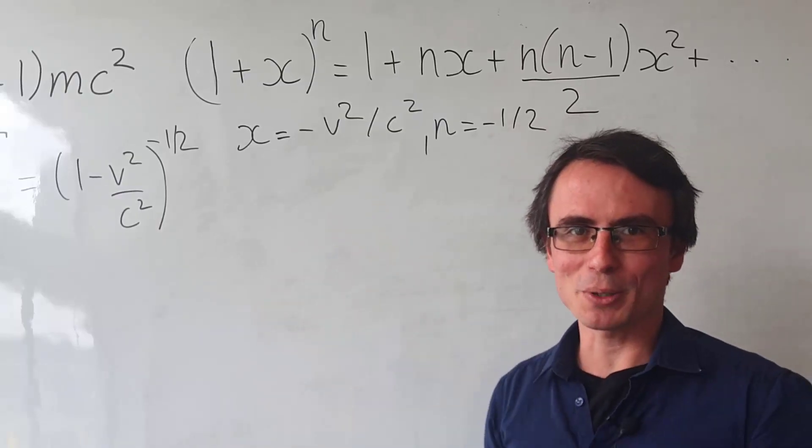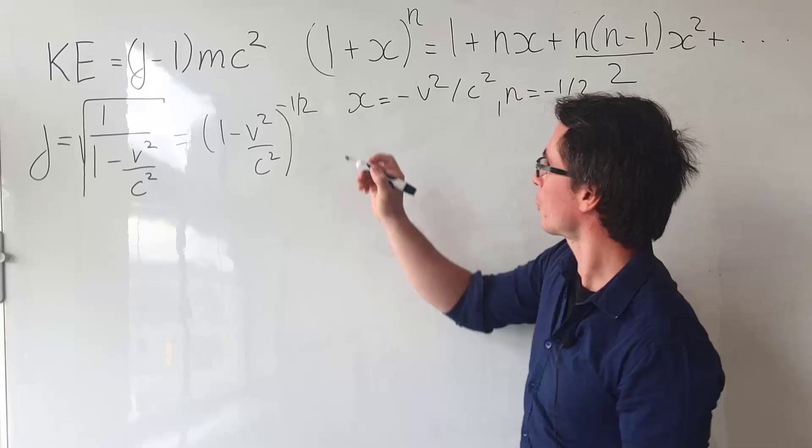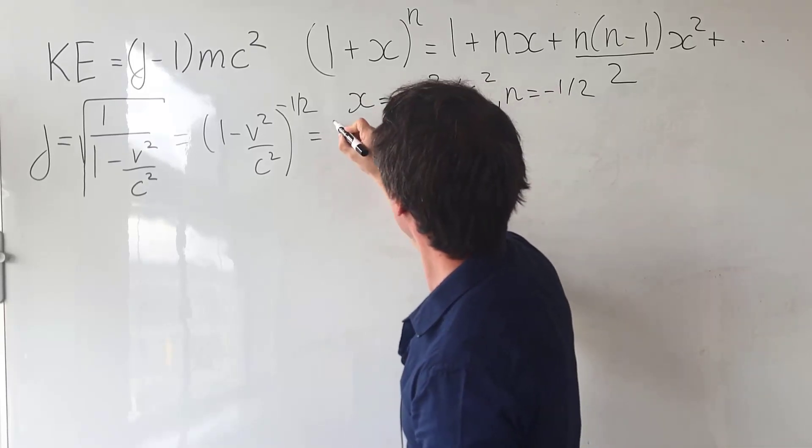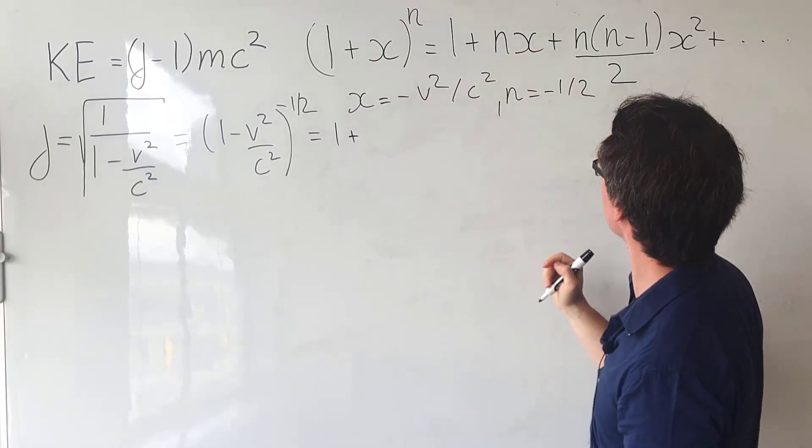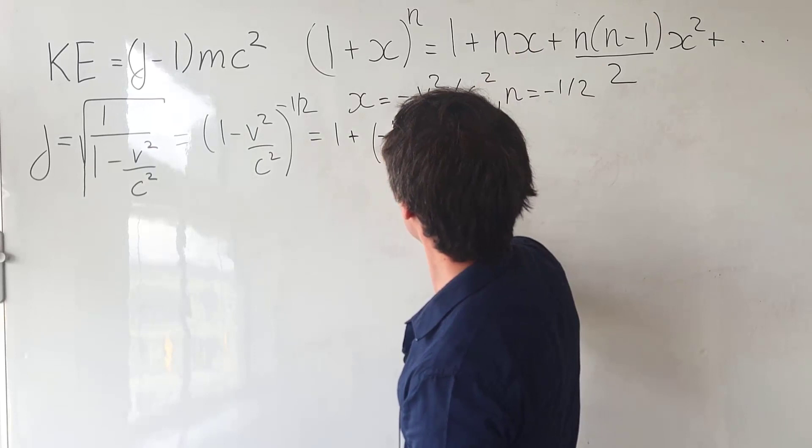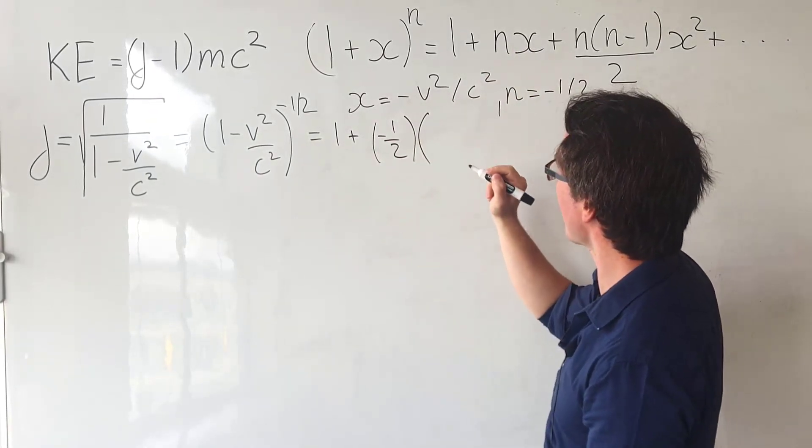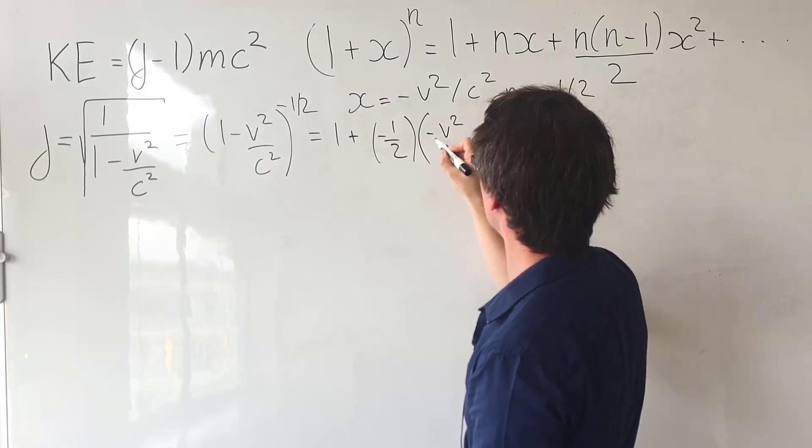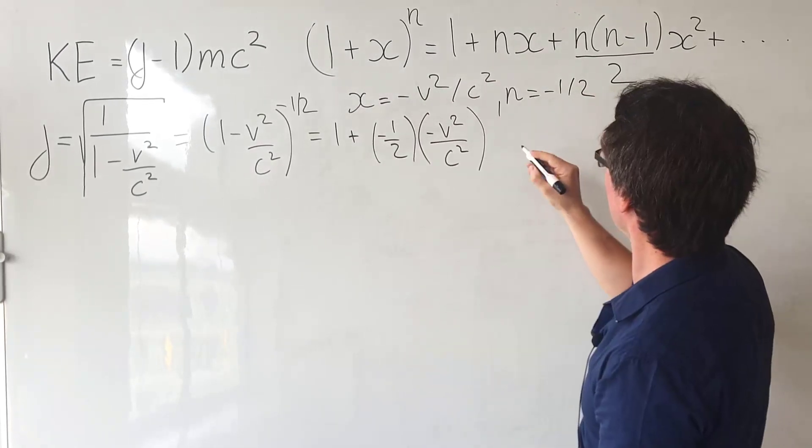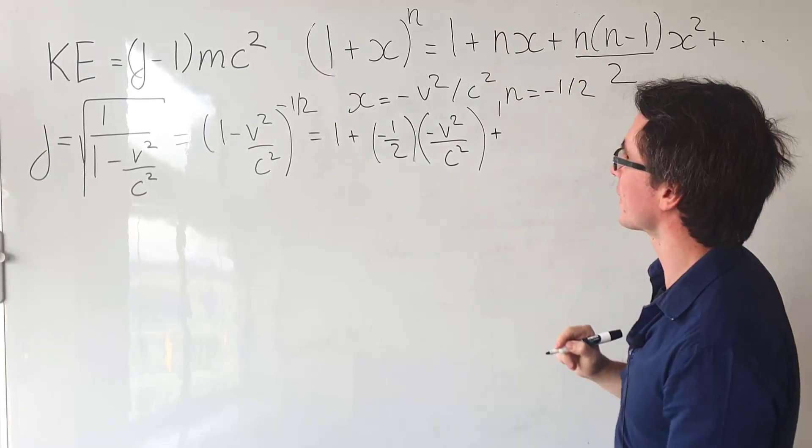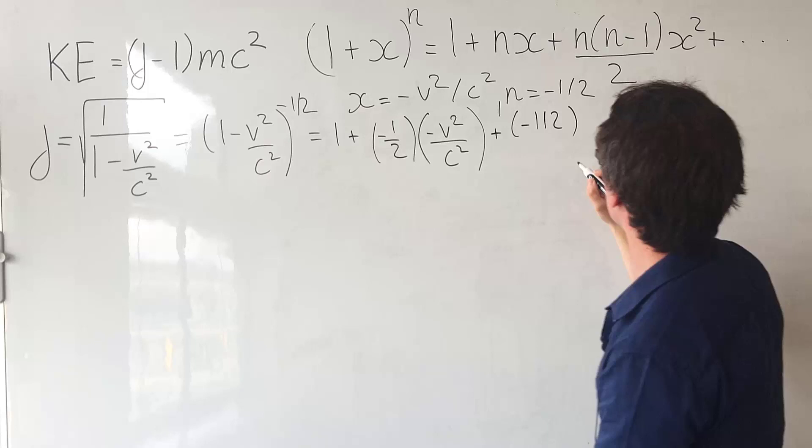This technique of applying the binomial expansion by the way comes up very often in physics olympiads. So now we're going to get 1 plus n times x. So that's going to be minus a half multiplied by x which is minus v squared over c squared.